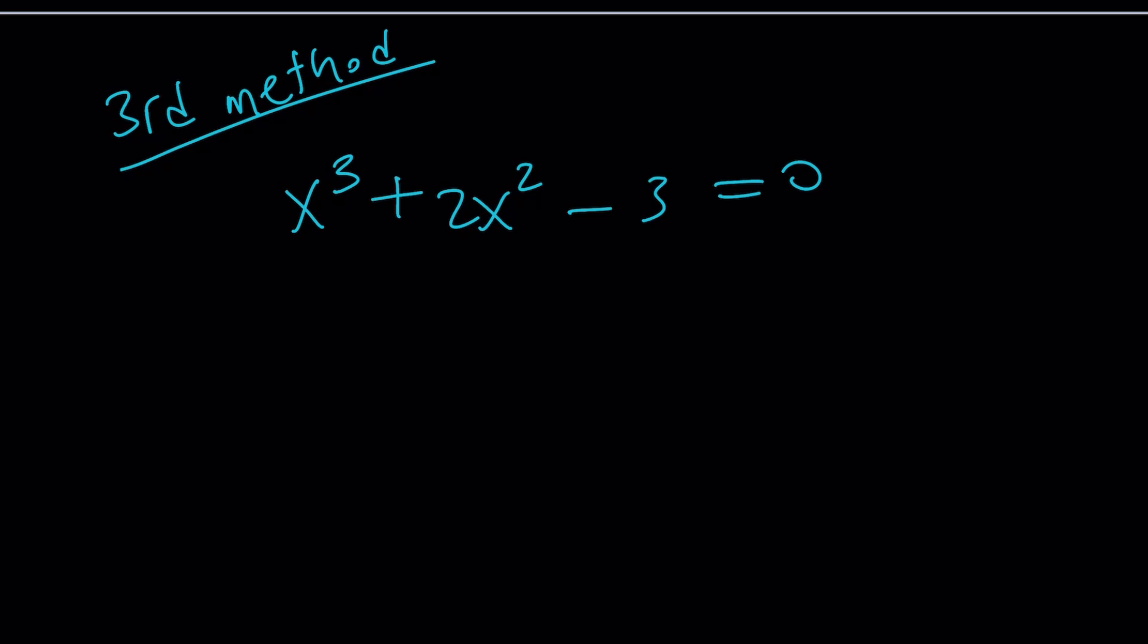We could use the RRT rational root theorem and find the potential solution. If you look at plus minus 1 and plus minus 3, you probably realize that x equals 1 is a solution. Why?